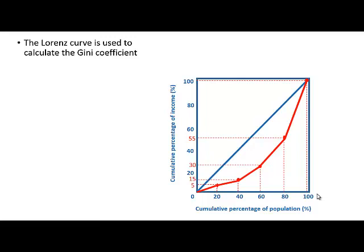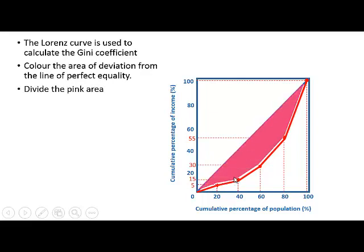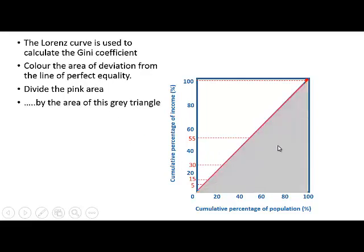The Lorenz curve can be used to calculate the Gini coefficient. First, color the area of deviation from the line of perfect equality — that is the pink area. Then we divide this pink area by the area of the total gray triangle.